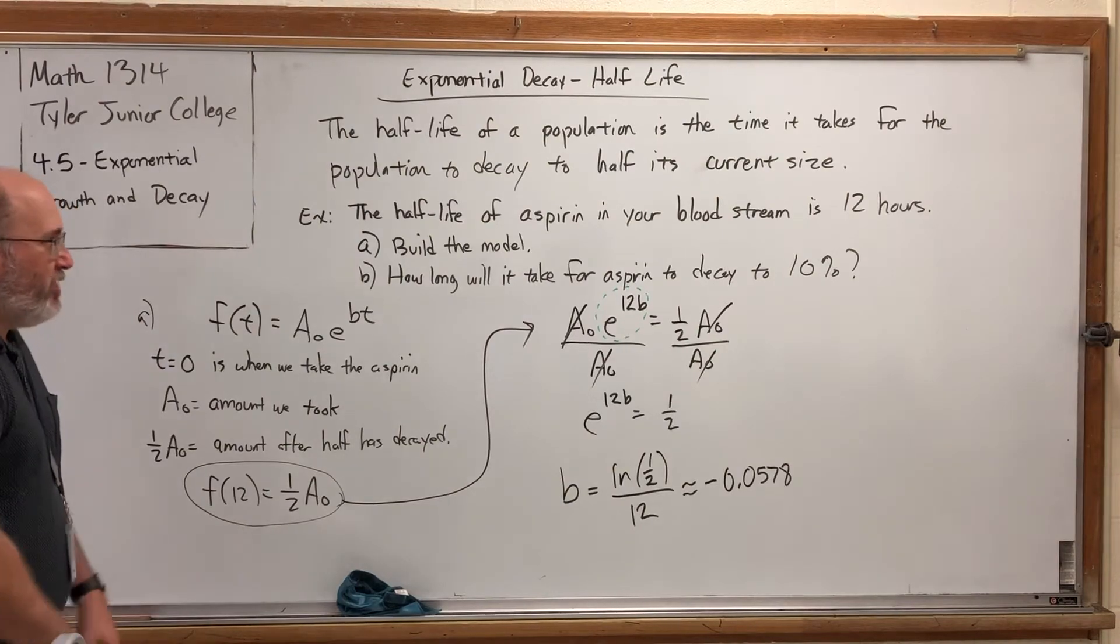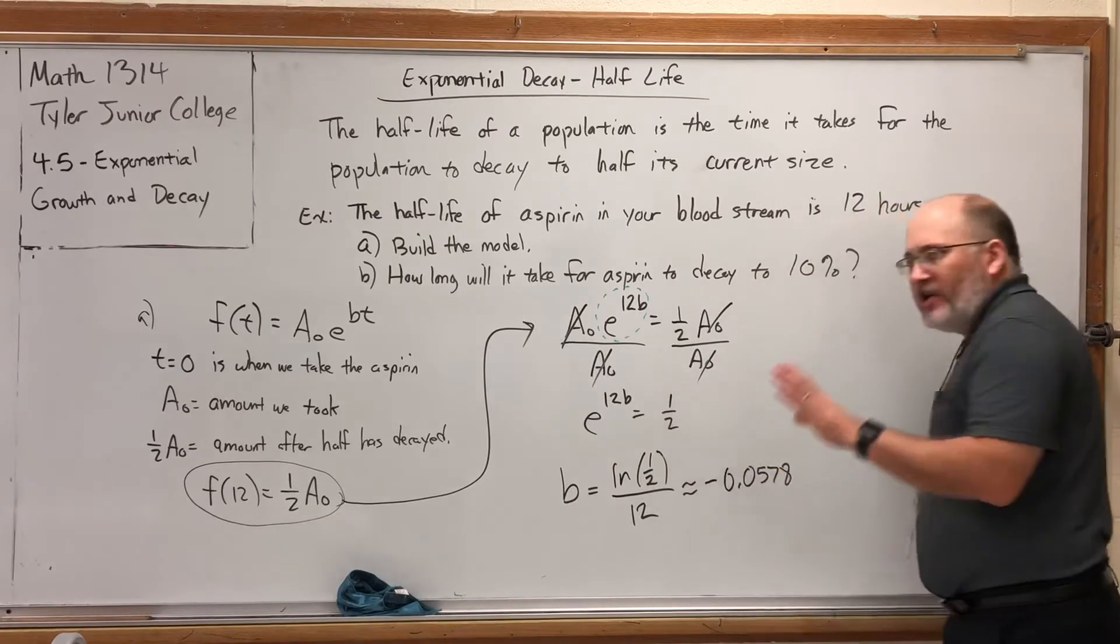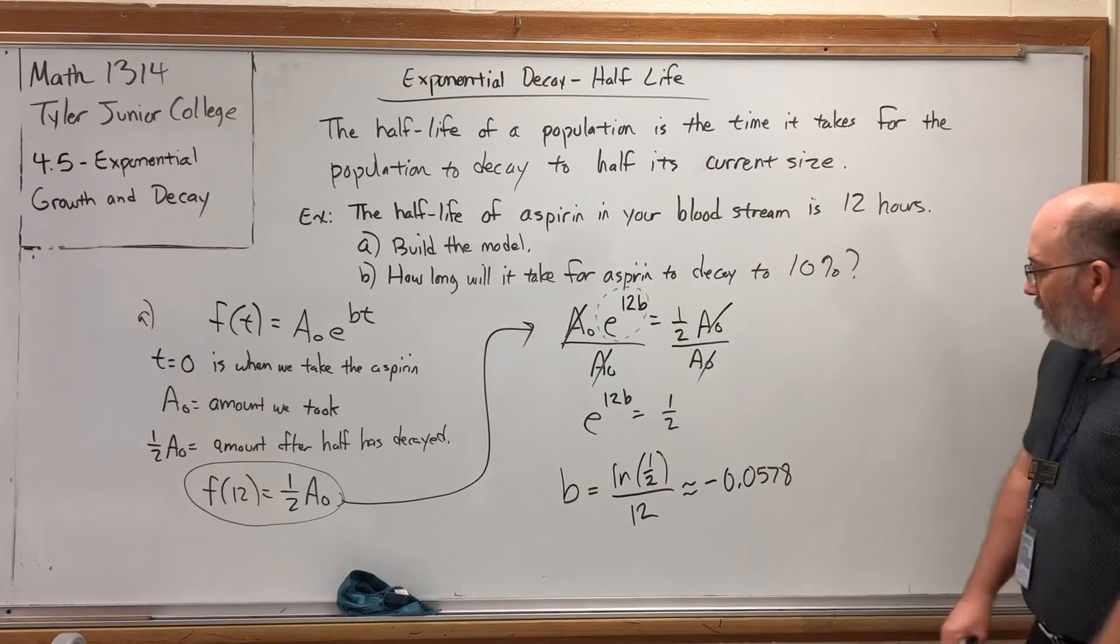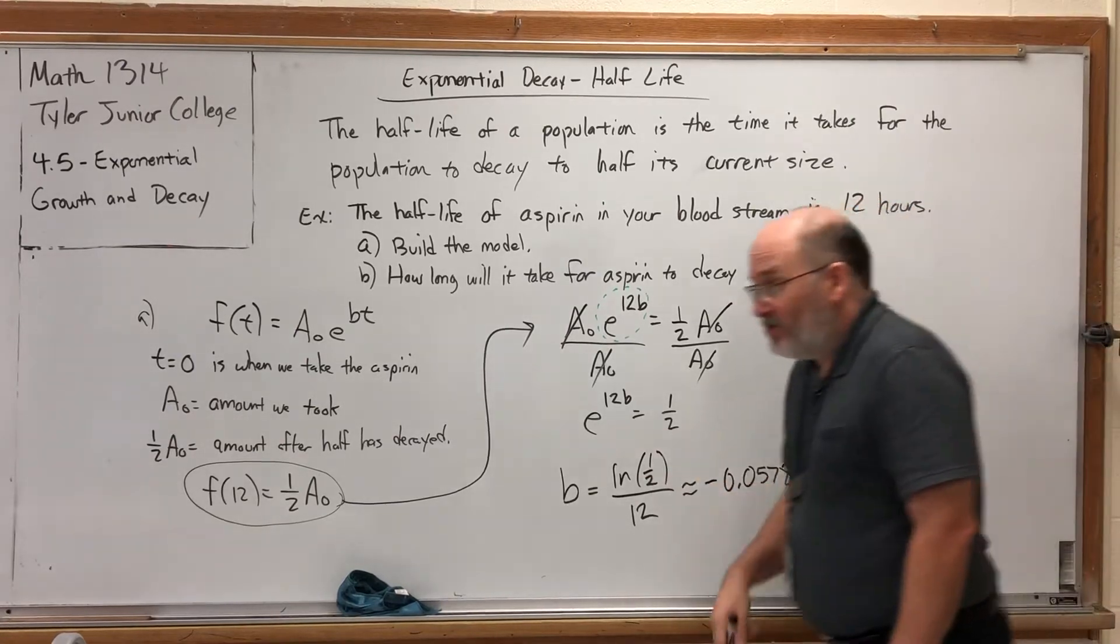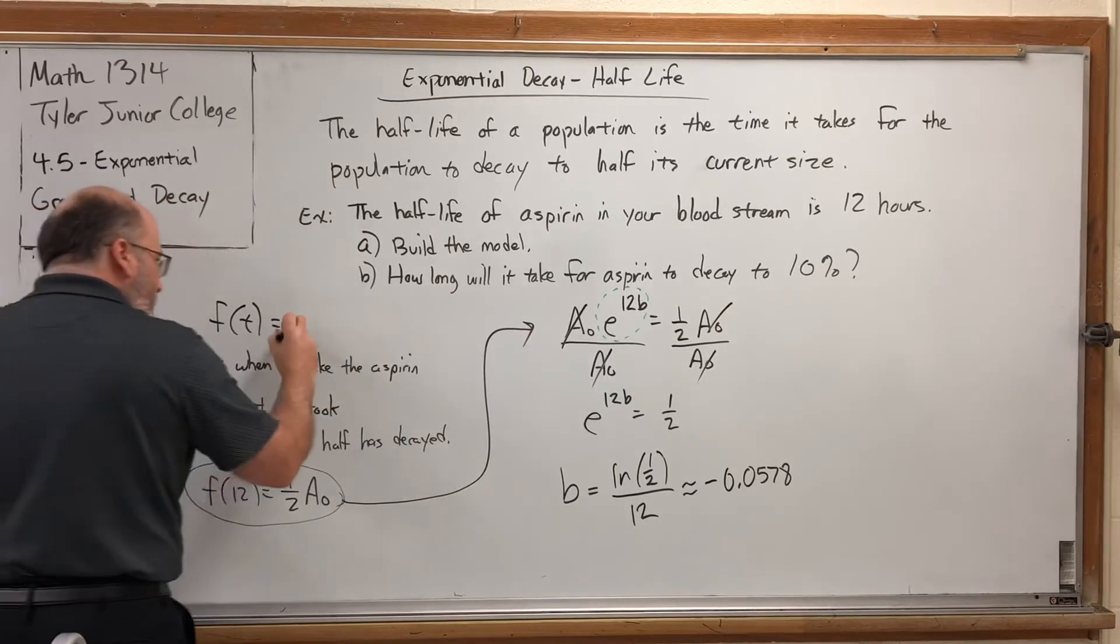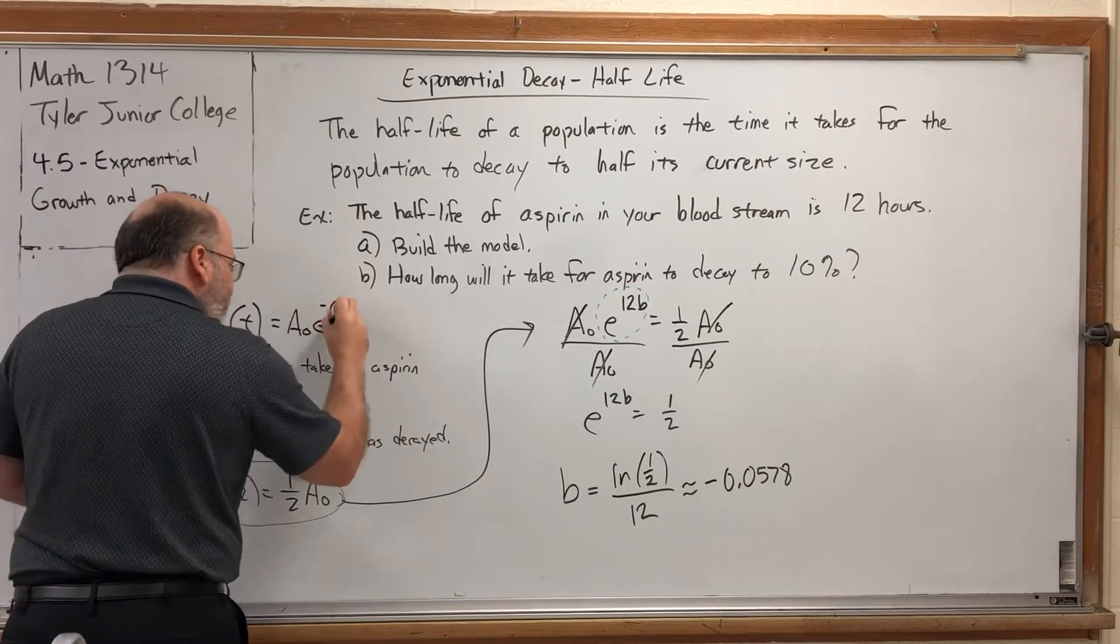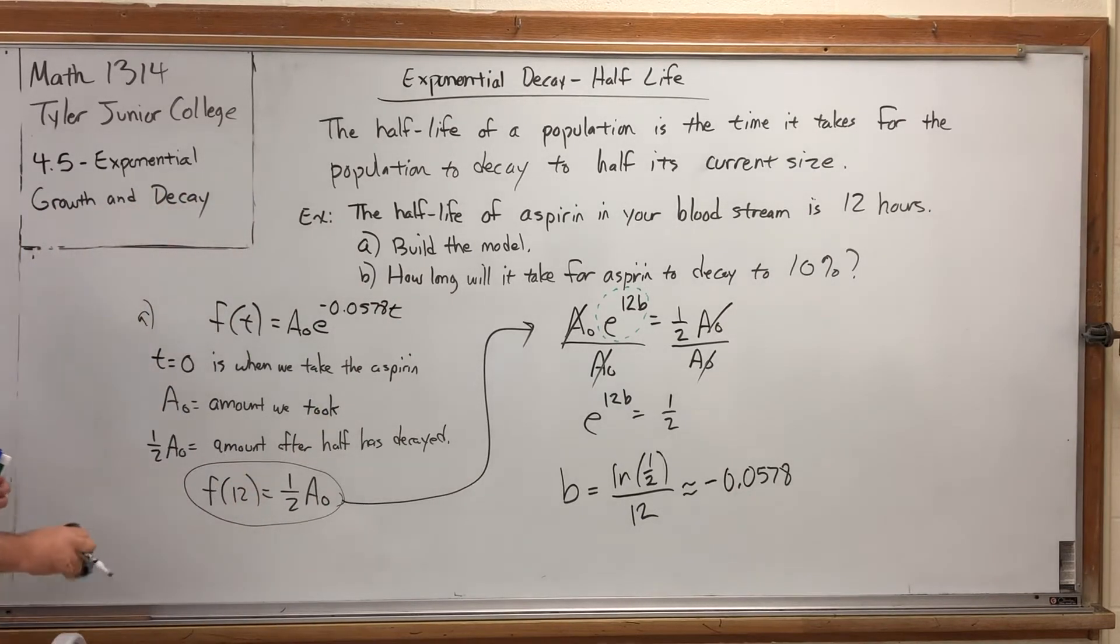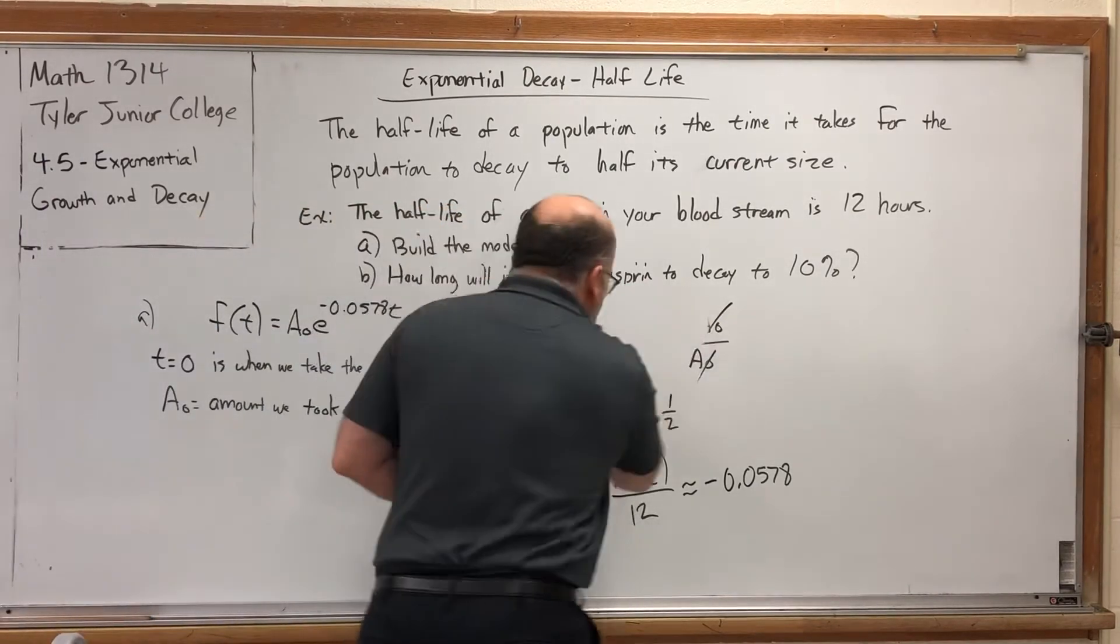So the decay rate is about 5.78% per hour, since that's what T is measured in. And it wouldn't be hard to generalize what just happened here. The 1/2 is here because we were talking half-life. So any half-life problem, this would always be natural log of 1/2. And the number on the bottom actually represents the half-life. So it's really easy to make a generalization here. But let's write our specific function. A₀, which we still don't have an initial amount, e to the negative 0.0578t. T equals 0 is when we take the aspirin, and A₀ is the amount we took.